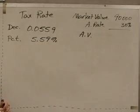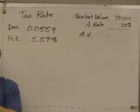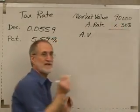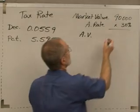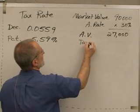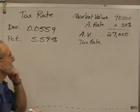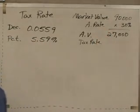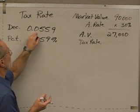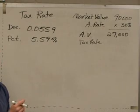Now, if we had a particular problem where the market value were $90,000 and the assessment rate were 30%, which is a pretty standard assessment rate, then we'd have an assessed value of 30% times $90,000 — everybody get $27,000 for that? And then if our tax rate were 0.0559 or 5.59%, we could multiply either one of those times $27,000 to get the property tax for the year. Try multiplying 0.0559 times $27,000, and then multiply 5.59% times that, and we should get the same answer.